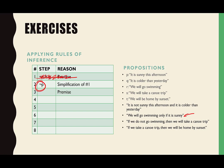Let's look at our next premise: 'if we do not go swimming, then we will take a canoe trip.' The two variables involved are not-R and S. So the premise is: not-R therefore S. If we do not go swimming, therefore we will take a canoe trip.